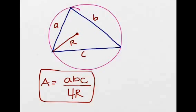The area of this triangle can be easily found by just multiplying the side lengths, so ABC divided by 4 times the circumradius.